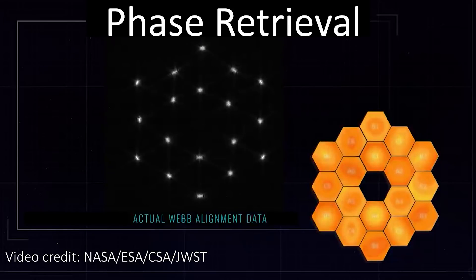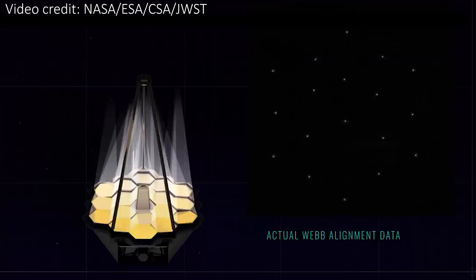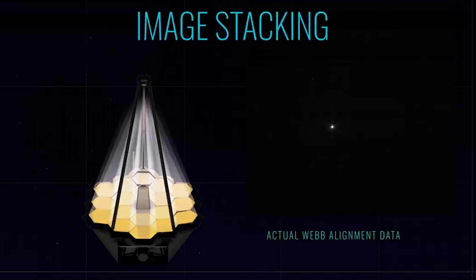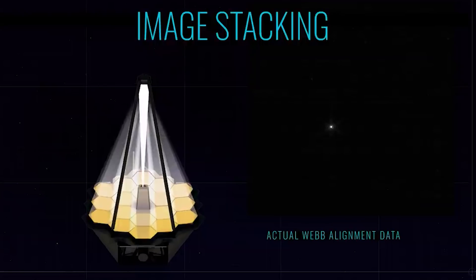This process was called phase retrieval and it removed effectively all of the aberration and gives us 18 perfectly focused versions of the star. They then slowly tilted each of the segments so that the light from each one would overlap in the detector inside the telescope. This process is called image stacking, and it may sound like the end of the story, but there is a difference between overlapping 18 images and getting them to actually work together to produce one single image.